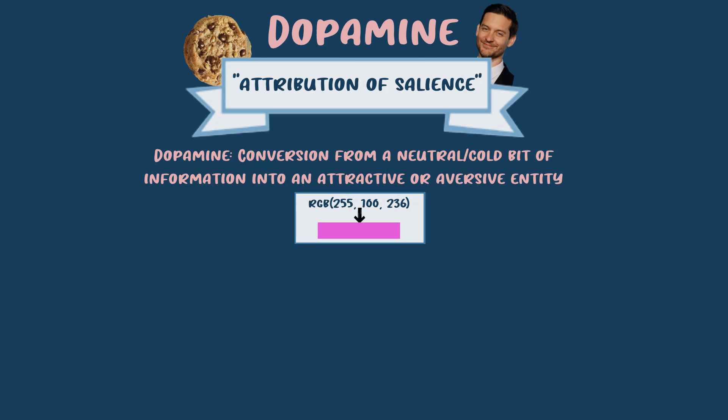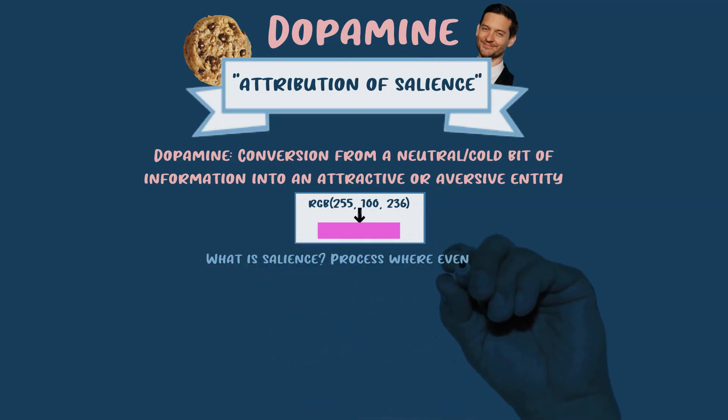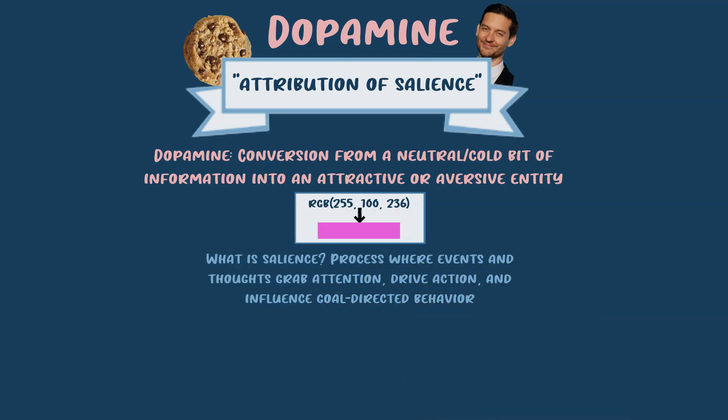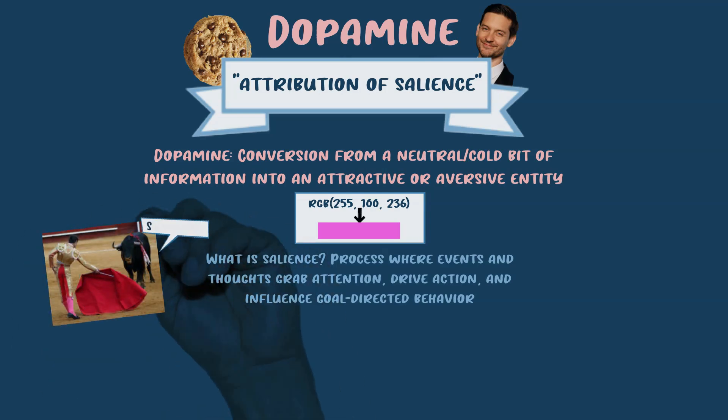We can understand the mesolimbic system as a critical component of the attribution of salience. Salience is the process where events and thoughts grab our attention, drive action, and influence goal-directed behaviors. This connects to what was previously understood as hedonic pleasure, motivation, reward, learning, and addiction — because the salience dopamine provides allows an organism to focus on what's valuable and convert motivation into action.